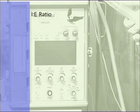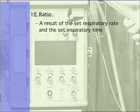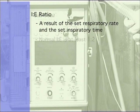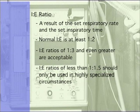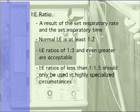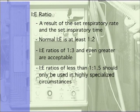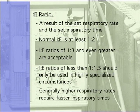I to E ratio. The I to E ratio in many cases is a result of the set respiratory rate and the set inspiratory time and usually cannot be changed independently. Normal I to E is at least one to two; I to E ratios of one to three or even greater are acceptable. I to E ratios of less than one to 1.5 should only be used in highly specialized circumstances to avoid ill effects of mechanical ventilation. I to E ratios are often calculated on mechanical ventilators but not all ventilators provide this function. Generally, higher respiratory rates require faster inspiratory times to achieve an appropriate I to E ratio.